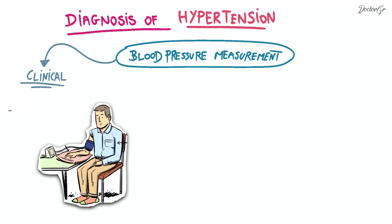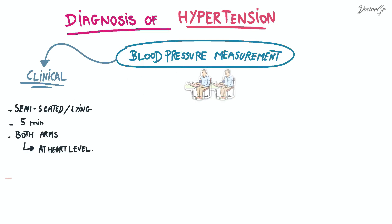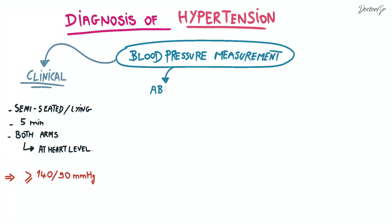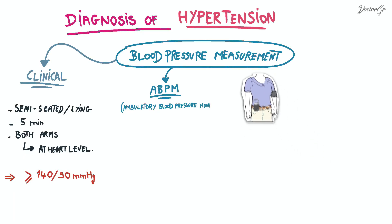First, clinical measurement: the patient is in a semi-seated or lying-down position for at least five minutes, and blood pressure is measured in both arms, repeated multiple times at heart level. Hypertension is diagnosed if blood pressure readings are equal to or greater than 140 systolic or 90 diastolic.